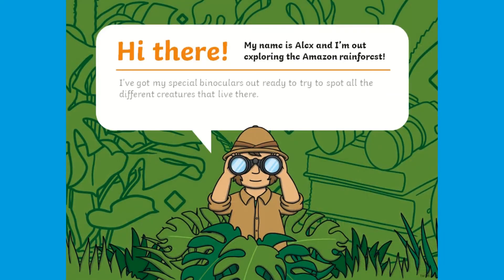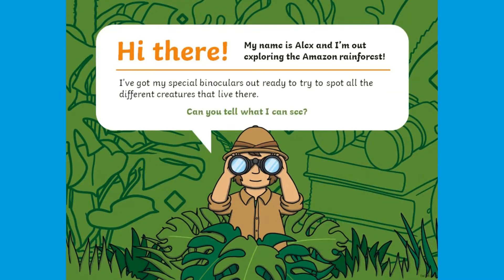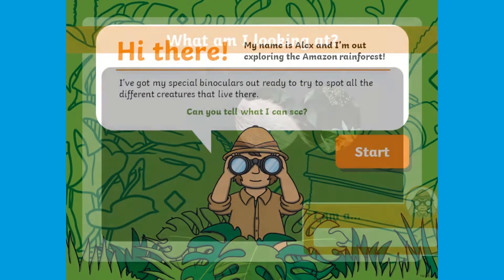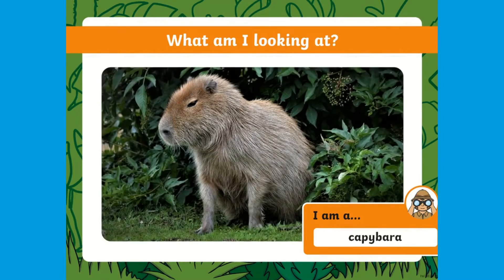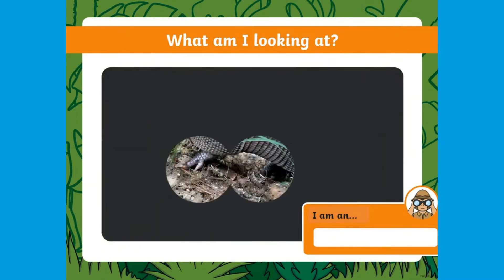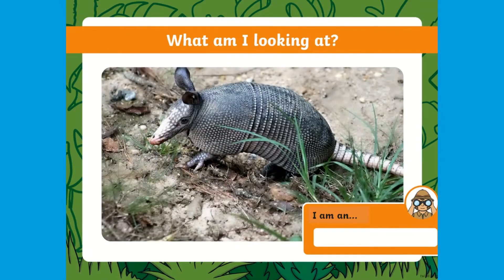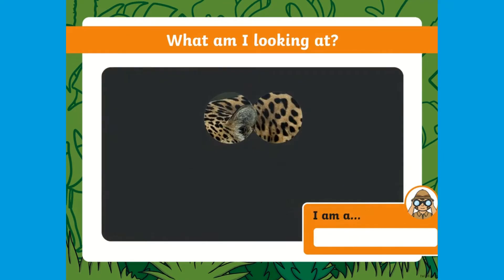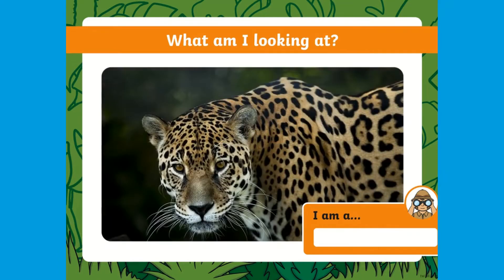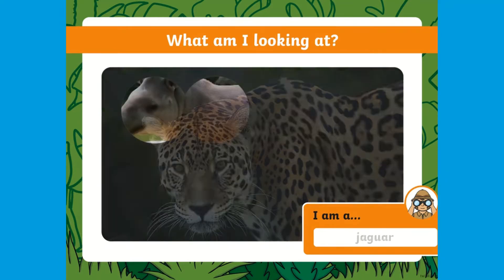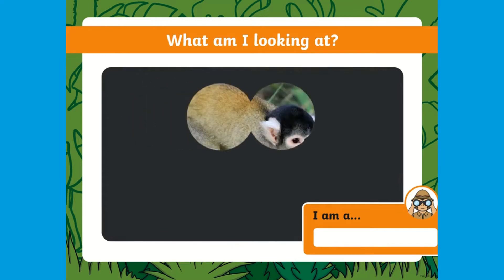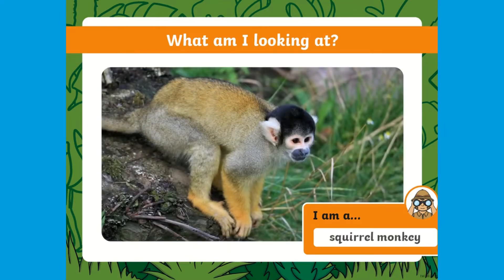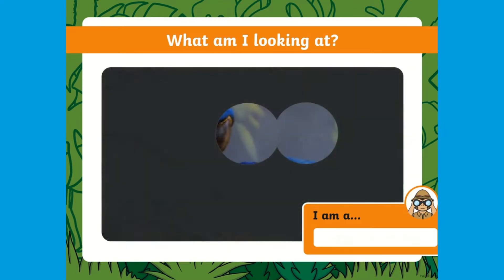If you're looking to introduce the topic of rainforest animals, this What's Behind the Binoculars PowerPoint is a perfect discussion task for you and your child. This PowerPoint contains pictures of rainforest animals, but only part of the animal can be seen through the binoculars. By clicking again, the binoculars will move around for another clue. Can your pupils guess which animal may be hidden? Why do they think this?